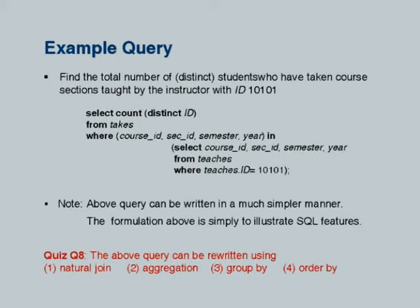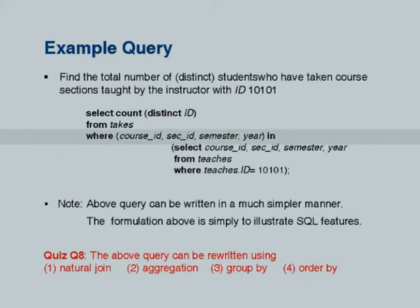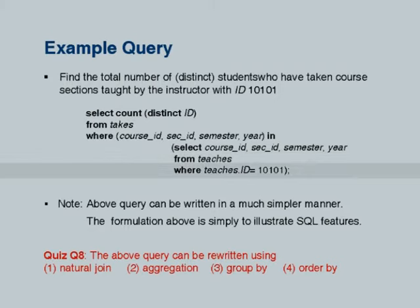The subquery checks that the section was taught by this instructor. What uniquely identifies a section? Course ID, section ID, semester, and year — these four attributes are required in our schema. To make sure the student took a section taught by this instructor, we check that this tuple of four values — course ID, section ID, semester, year — is in the result of: SELECT course_id, section_id, semester, year FROM teaches WHERE teaches.id = 10101. This is a set of all sections taught by that person, and we make sure the student took that section. Of course, you can do it using a join as well.